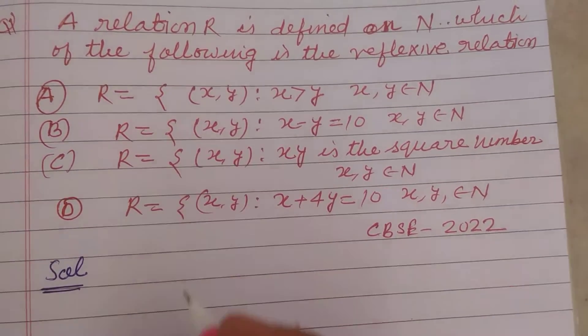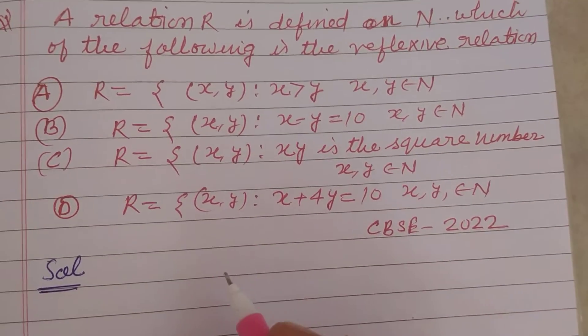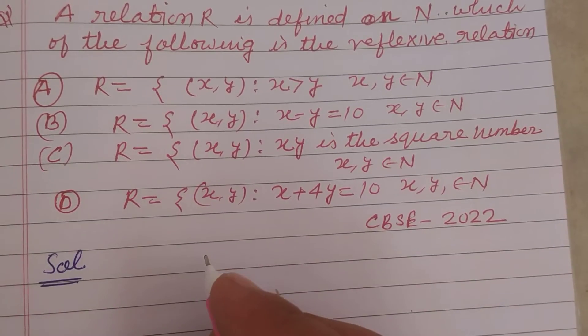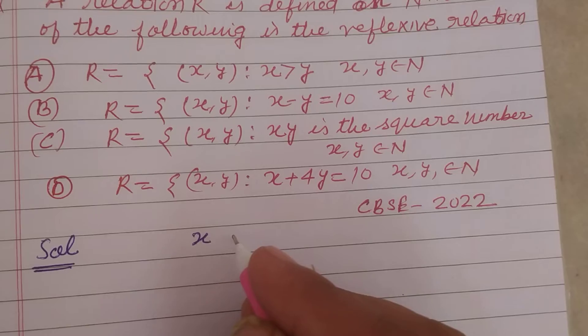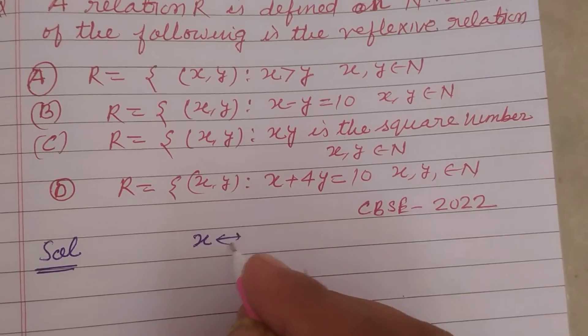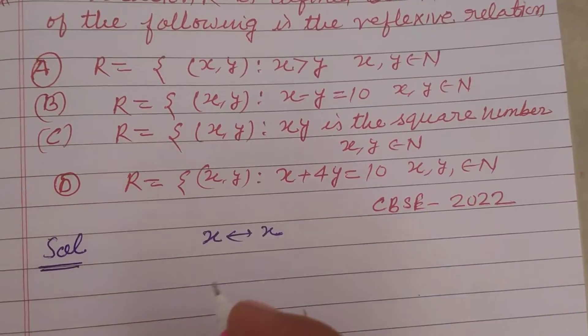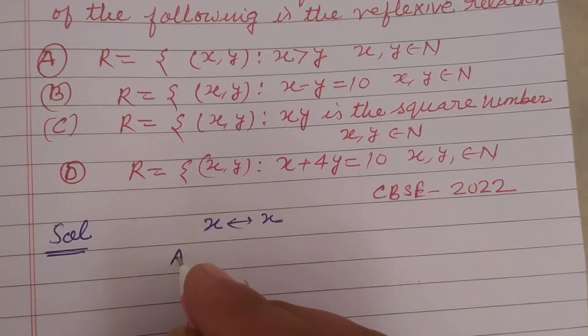We want to find out which is the reflexive relation. You know that a reflexive relation is the relation of the same number to itself, okay? So x to x. So first we check the given options.